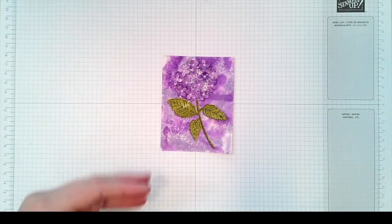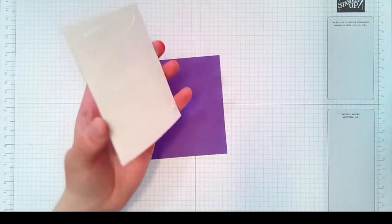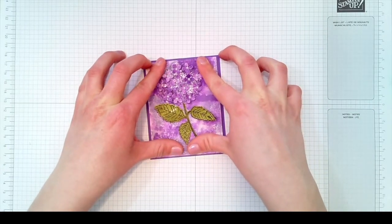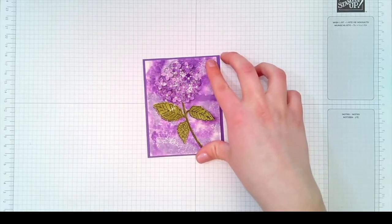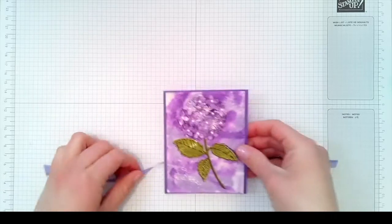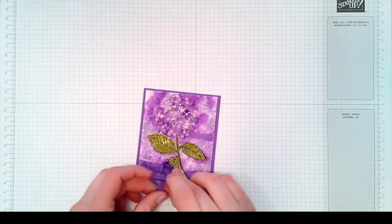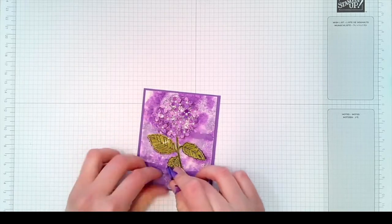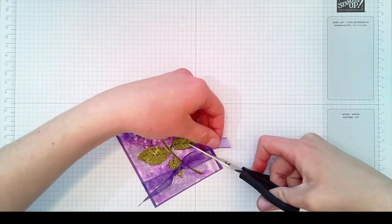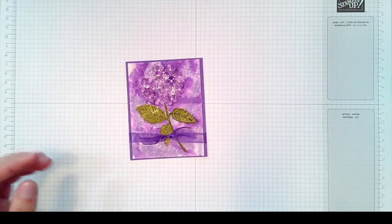Next we will grab a three and a quarter by four and a quarter sheet of gorgeous grape. We are going to just put a little Tombow on the back here and attach that. I have some gorgeous grape sheer ribbon that goes with the hydrangea Haven bundle and we're just going to tie that around the base of the card to add a little extra embellishment.